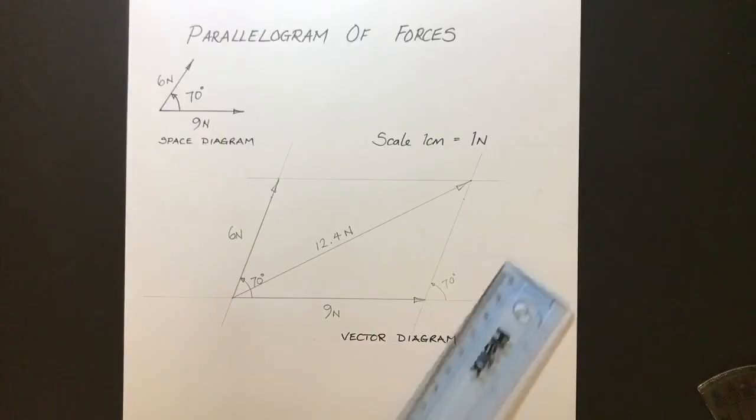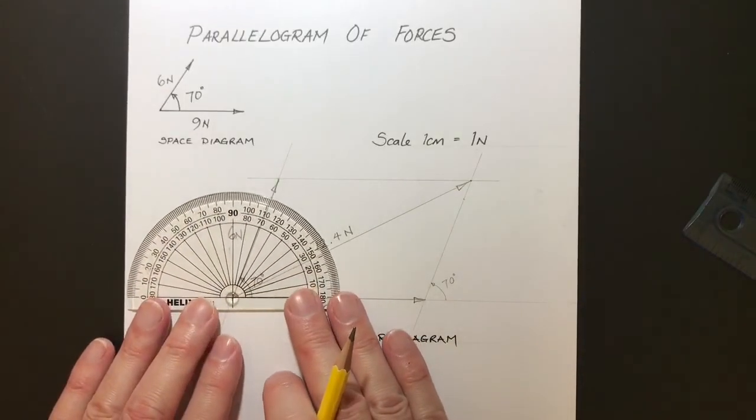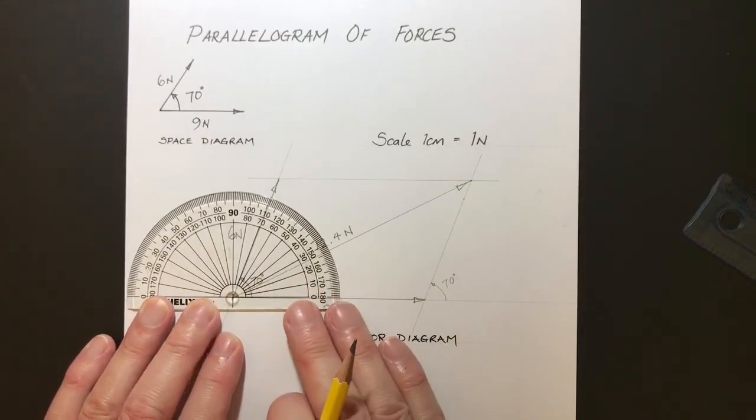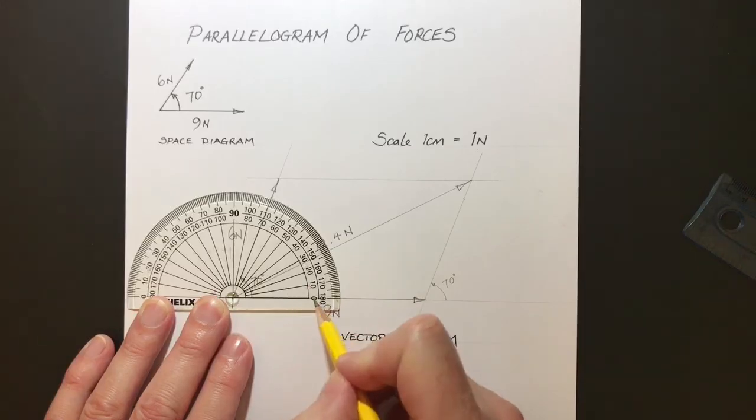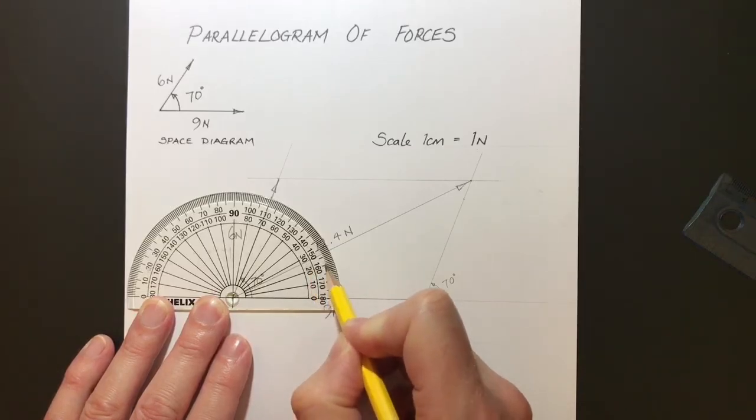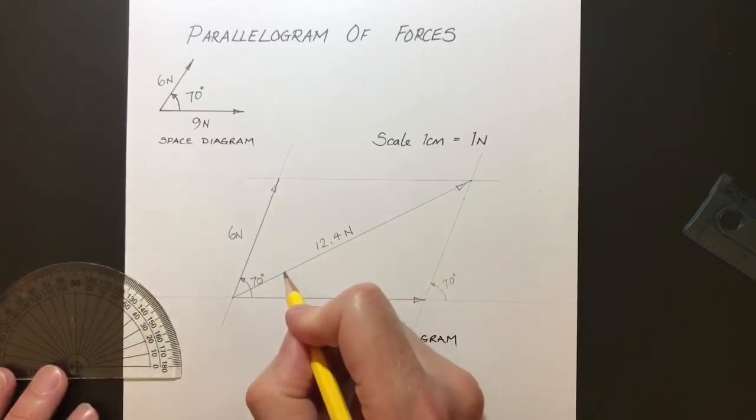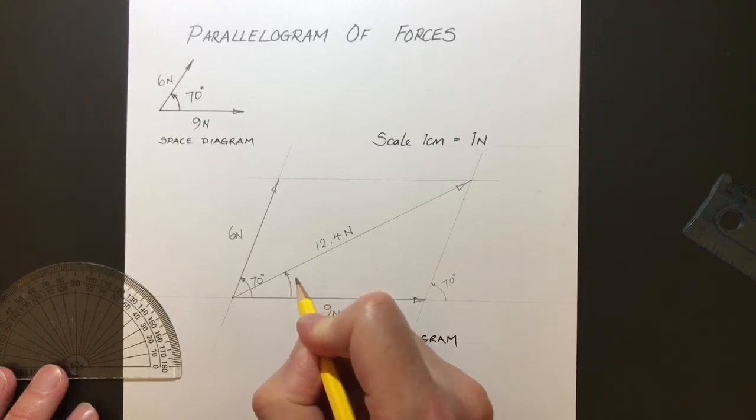What direction is that resultant? Well, let's take our protractor over here and have a look. And we have an angle of, no, it's bigger than 20, so it's bigger than 25, 26, 27 degrees. So our angle there, 27 degrees.